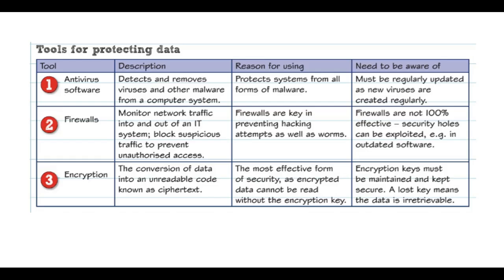The next one is a firewall, which is similar to antivirus software. It's installed on your computer and it monitors the traffic going into your computer, so it'll detect any suspicious traffic or if someone's trying to access your computer without your knowledge. That's important for preventing hackers and other types of malware. A downside is that firewalls are not 100% effective — hackers can find a way around them to gain access to your information or computer.